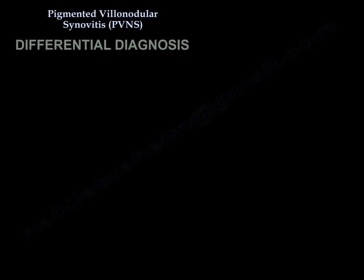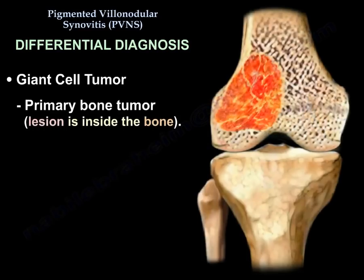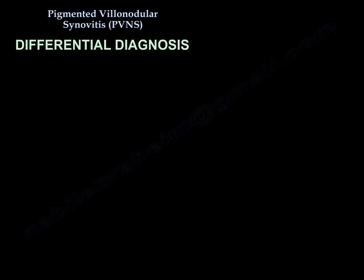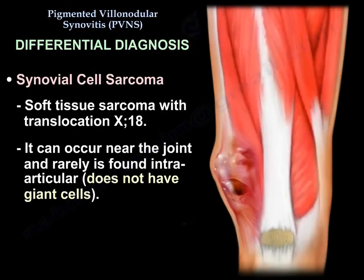Regarding differential diagnosis: giant cell tumor is a primary bone tumor — the lesion is inside the bone. Synovial cell sarcoma is a soft tissue sarcoma with translocation X;18, which can occur near the joint and is rarely found intra-articular. It does not have giant cells.